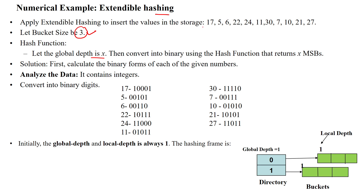The given numbers have to be converted into binary format using the hash function, which returns x number of most significant bits. We have taken the global depth as x, so for each binary format of the given number it will take x most significant bits to refer to the index of the hash table. First we calculate the binary form of all 11 given numbers. Initially, global depth and local depth are both 1.